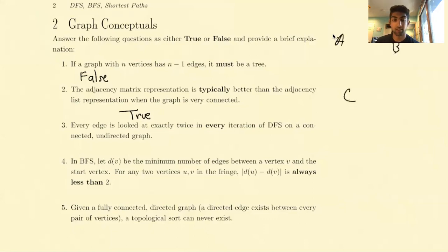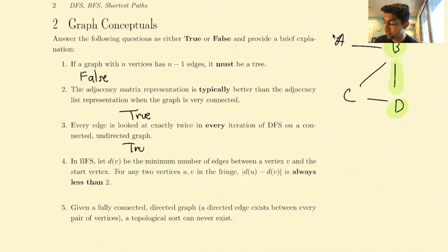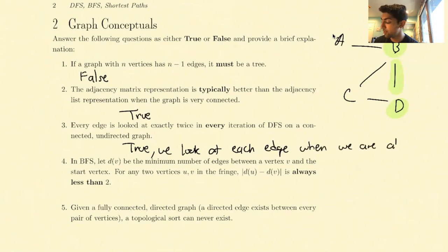Let's create a connected undirected graph. How many times do we look at this green edge? Well, when we're at B we look at it, and when we're at D we look at it. Each DFS iteration visits each vertex exactly once, so we're at D exactly once and at B exactly once. So we can see that each edge is looked at exactly twice - we look at each edge between U and V when we're at U and when we're at V. True.